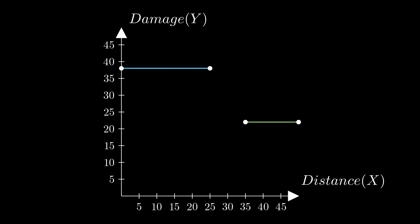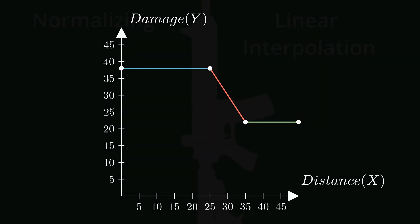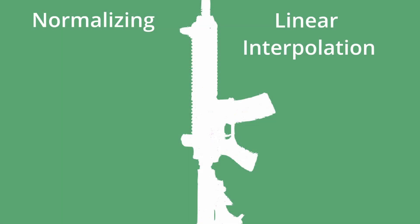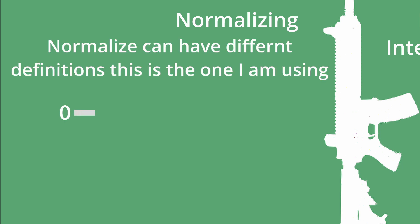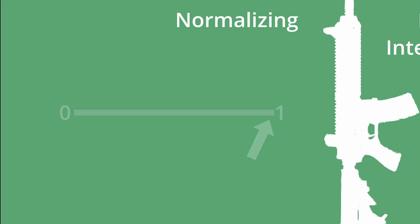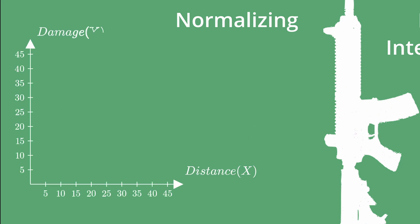In this method, instead of us calculating the line, we can let math do it for us. First we've got normalize. Normalizing values mean you have to scale the values between the range 0 and 1. And the normalized values will be in between these values. We want to normalize values we want to interpolate between. In the context of Jager's gun, this means between 25 and 35.